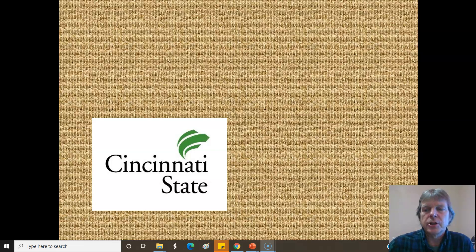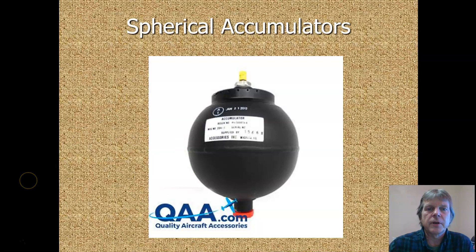There's a couple of different types of accumulators that we use in aircraft, and the first one is called a spherical accumulator. Here's a spherical accumulator. It looks like a big round ball, and it's got a charge valve up on top. We're going to put nitrogen in this accumulator, and then in the bottom, we've got a port where hydraulic fluid can come up inside this and be stored under pressure for when we need it.